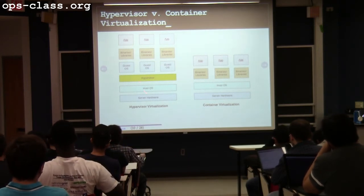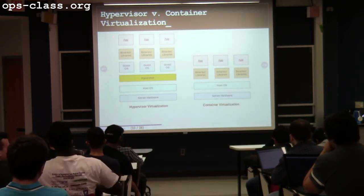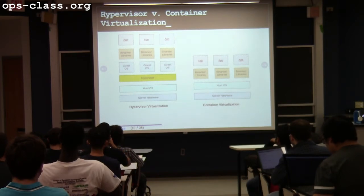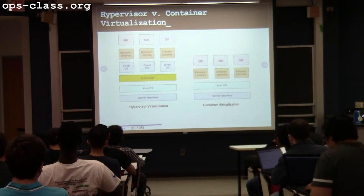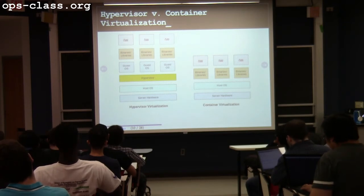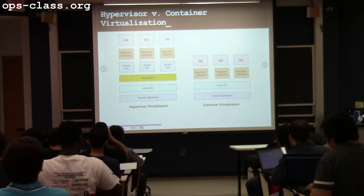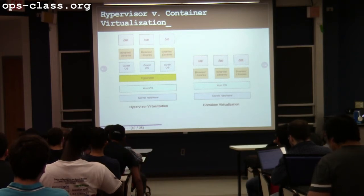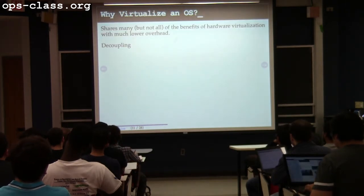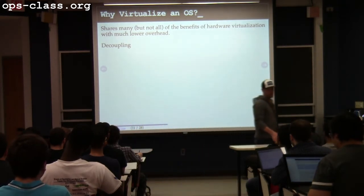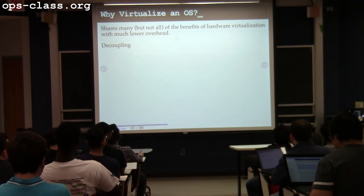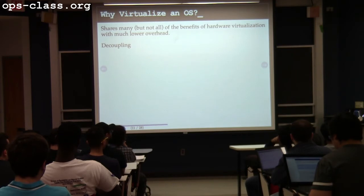With type-2 hypervisor virtualization, I have a hypervisor running on top of the host OS, and inside each VM I have a guest operating system, all binaries and libraries, and applications. With container virtualization, I have one operating system. Container virtualization preserves a lot of what we liked about hardware virtualization but at lower overhead because there's only one operating system. I can't run multiple operating systems in different containers, but the overhead is dramatically reduced.